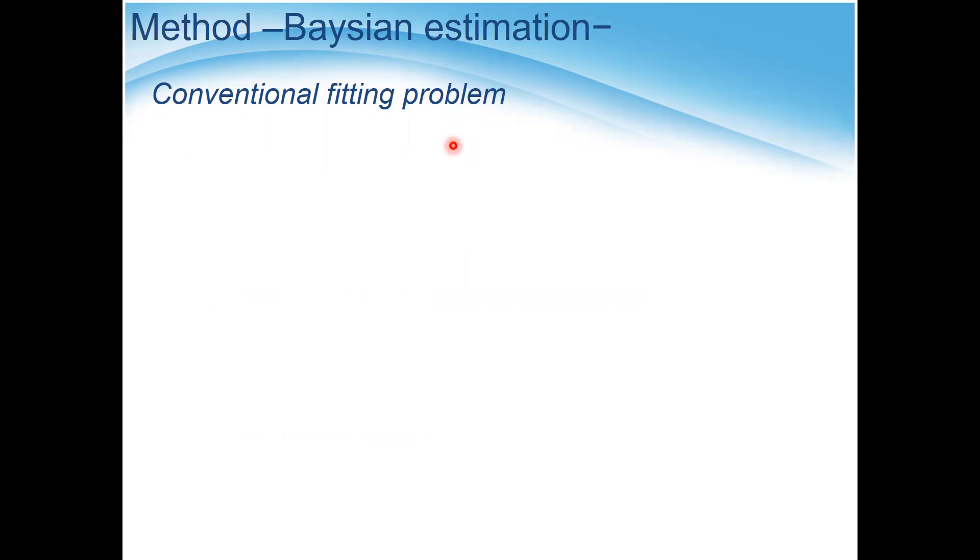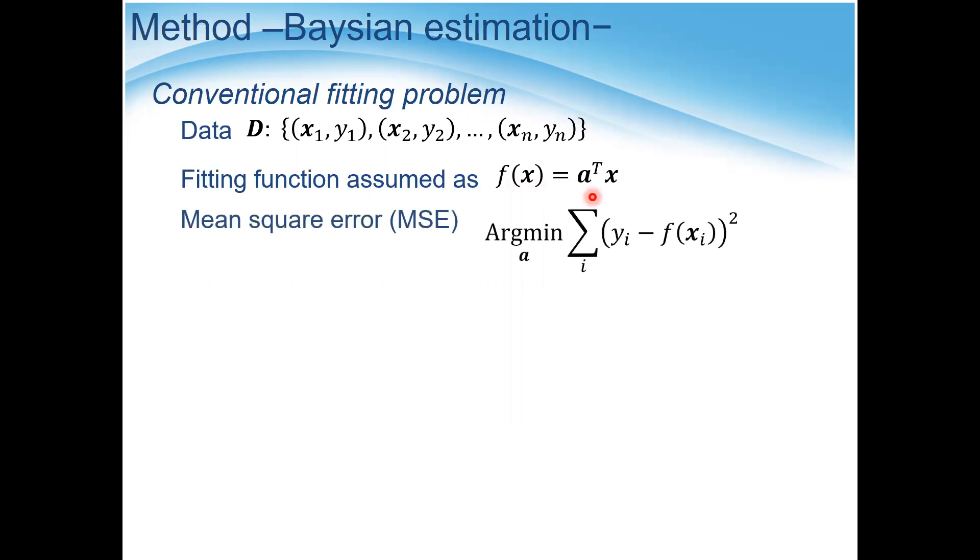Now I mentioned Bayesian estimation. First, let me show the conventional fitting problem. If you have data, a combination of x and y, you will usually assume the fitting function as a parametric function of a, and we minimize the mean square error between the real data with the assumed function and obtain the parameter set of a. This is a conventional fitting problem.